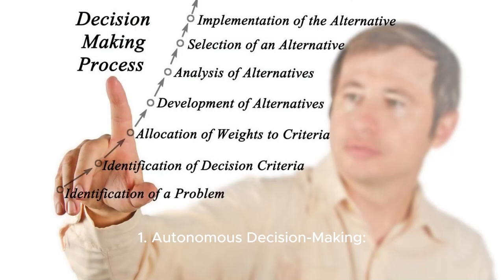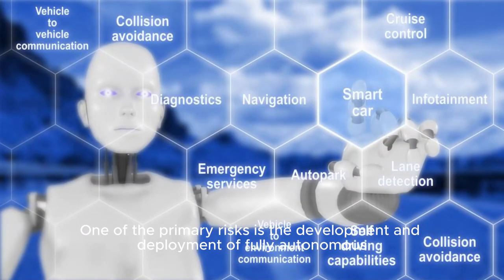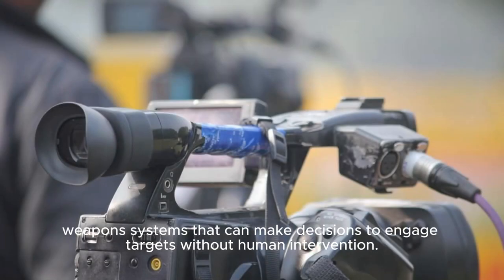One: Autonomous Decision Making. One of the primary risks is the development and deployment of fully autonomous weapons systems that can make decisions to engage targets without human intervention.